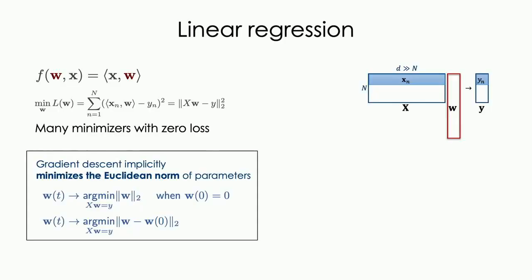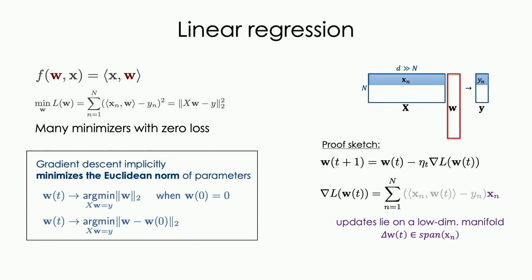The first result: if we do gradient descent on this objective with initialization starting at zero, independent of step size, some forms of momentum, and whether we do stochastic gradient descent or not, we'll always converge to a solution which minimizes the L2 norm of the parameters subject to fitting the data — a minimum L2 norm solution. More generally, with general initialization, it's a minimum L2 distance solution. This follows from a simple proof: the gradients are always spanned by the data points, so updates never leave the span of the data, and within that span there is a unique solution.